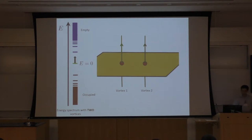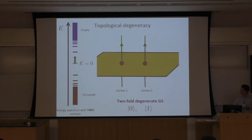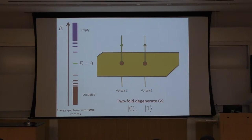What does this mean? The chemical potential is here, so I have to occupy the negative-energy states. But this zero-energy mode: if I occupy this state or if I don't occupy it, I get the same energy. So I have two different states with the same total energy. This zero mode can be occupied or unoccupied by a fermion, and in both cases I get the same total energy. So I have a two-fold degenerate ground state — zero and one.